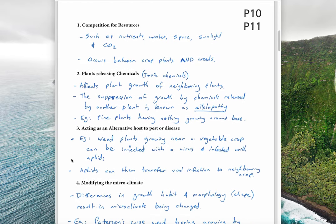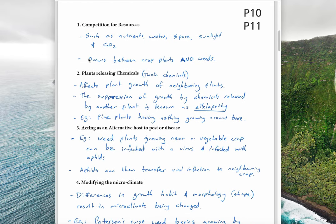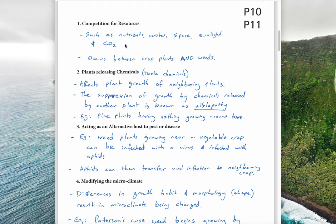The first way plants compete is competing for resources: nutrients, water, space, sunlight, and carbon dioxide. These are all things plants compete with each other for, which we looked at in the P9/P14 dot points. This competition occurs between crop plants and weeds.